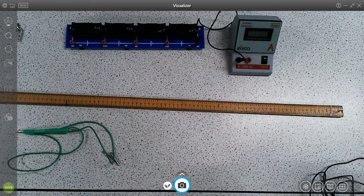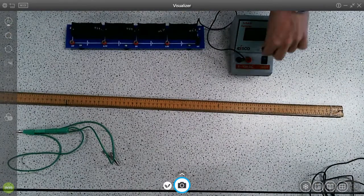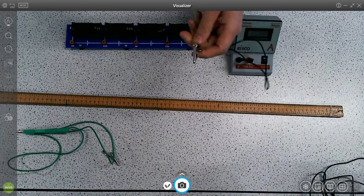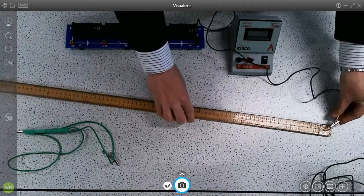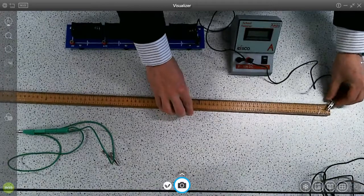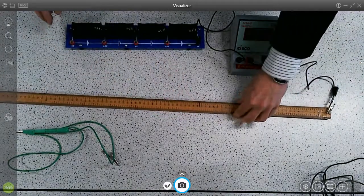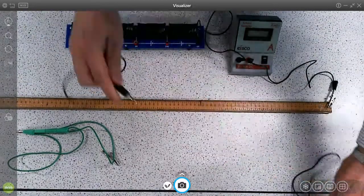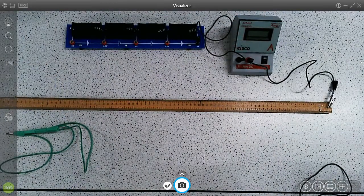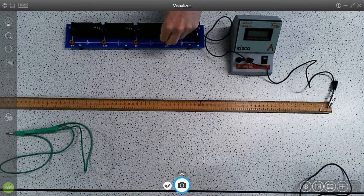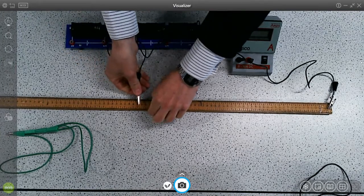So battery pack to the ammeter, ammeter to one end of the wire. I'm just going to turn this wire around so it starts at 1 centimeter rather than 99. I'm going to crocodile clip it onto the nail, and then I'm going to get another crocodile clip and go from the other end of the battery to the wire.